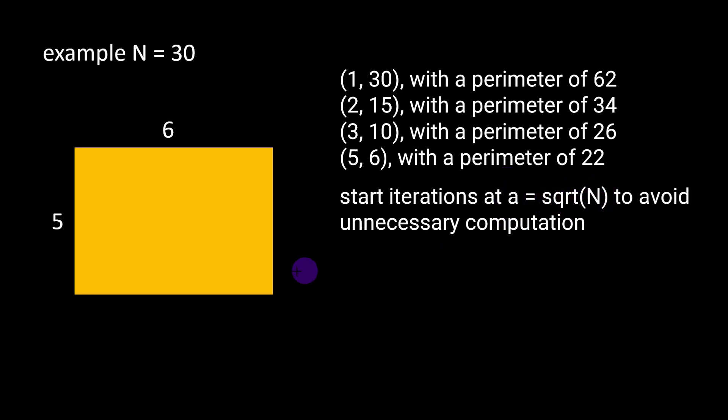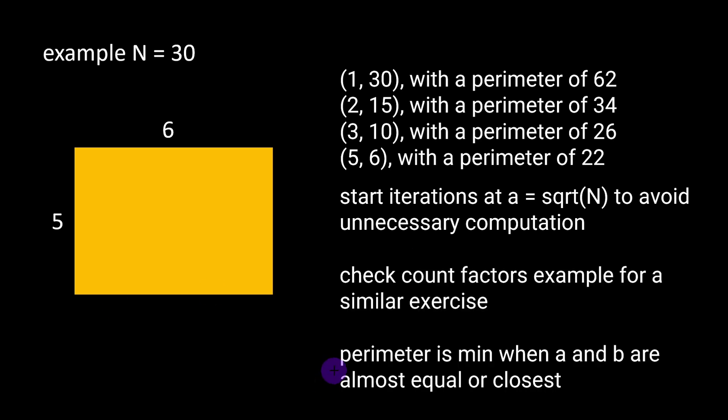There is also a trick that would make our task even shorter: the fact that the perimeter is minimal when A and B are almost equal. In this case we are looking for a square shape instead of a rectangle. In other words, the minimum value of perimeter is found for A and B dimensions where the rectangle would be resembling a square as much as possible.